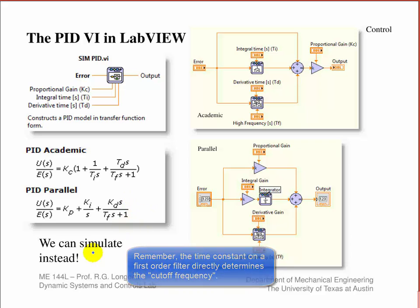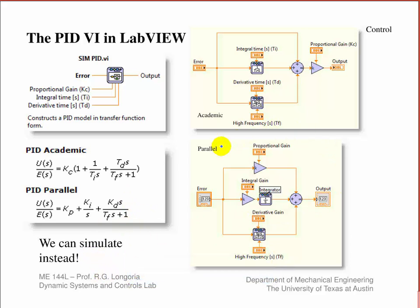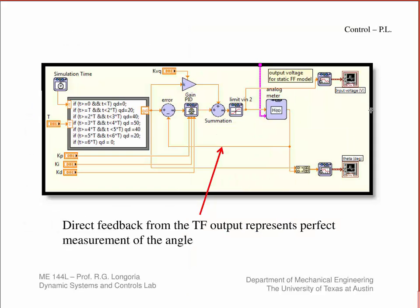Here's how the parallel PID is implemented: the error comes in, there's a proportional path, an integral path where you multiply by the integral gain and take the integral, and a derivative path where you take the derivative of the error with a little filter, then add all those up to get your output action. And here's the academic version as well.